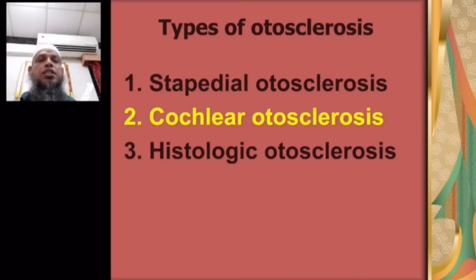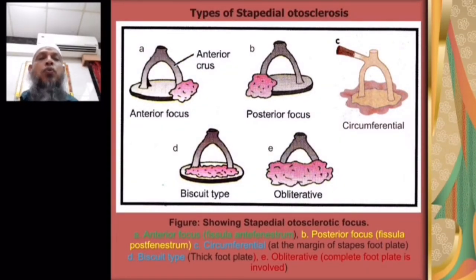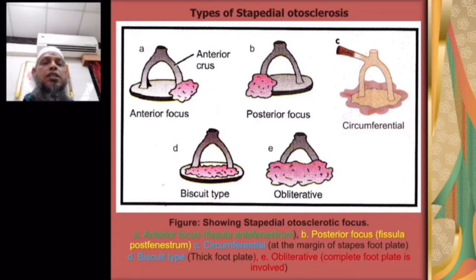Types of otosclerosis: number one is stapedial otosclerosis, which causes stapes fixation and conductive deafness — the most common variety. Subtypes include anterior focus (fistula ante fenestram, 80–90%), posterior focus behind the oval window, circumferential involving the margin of the stapes footplate, and biscuit type occurring in the footplate except the annular ligament. The obliterative type causes complete involvement of the footplate.